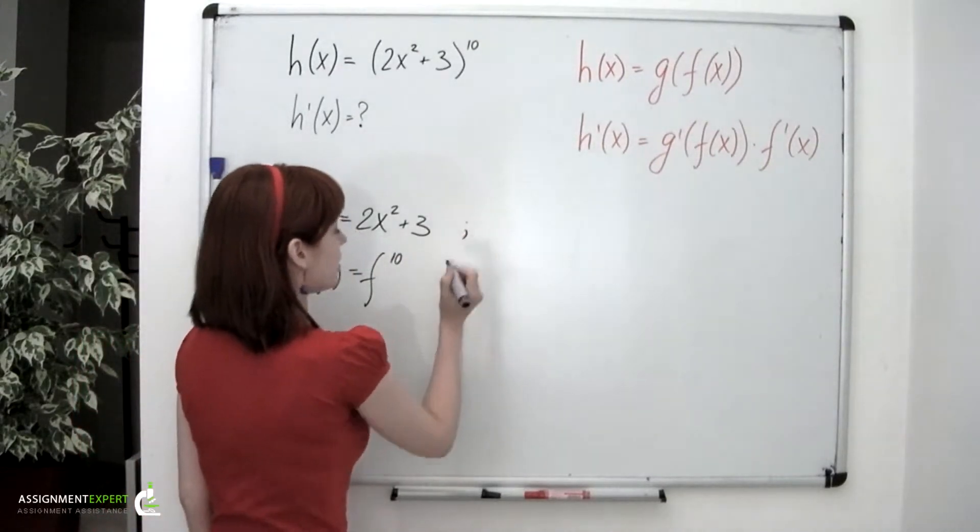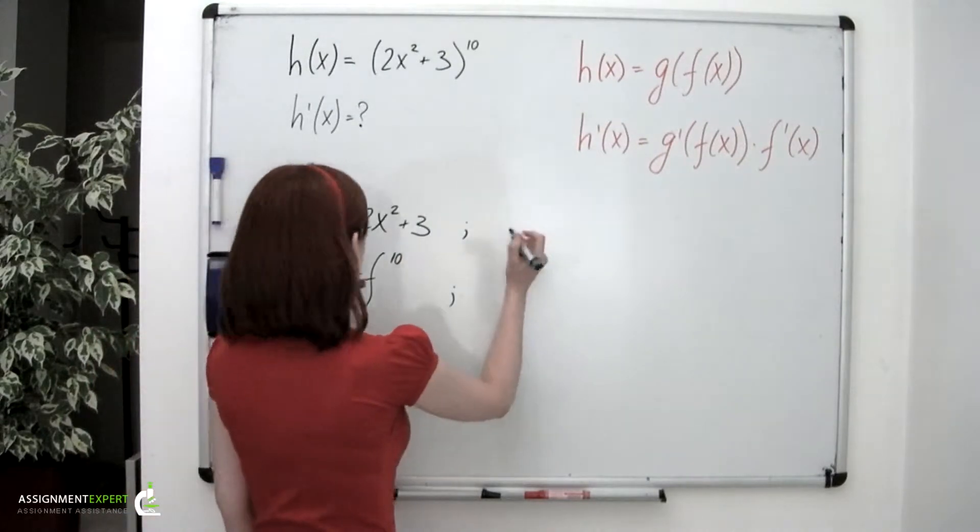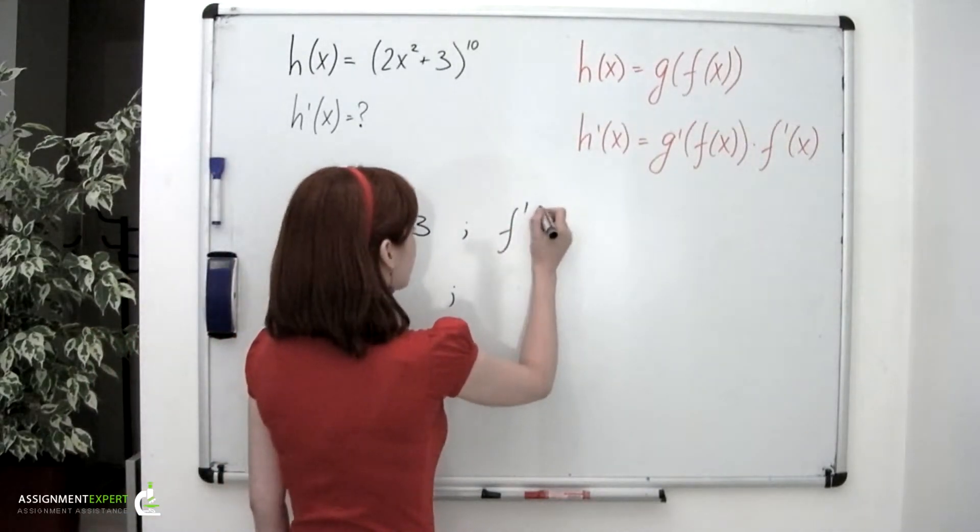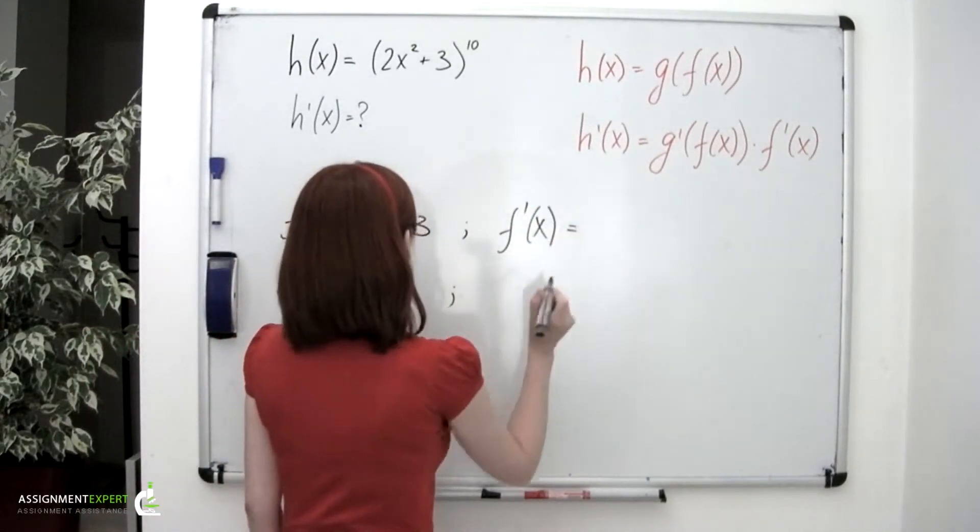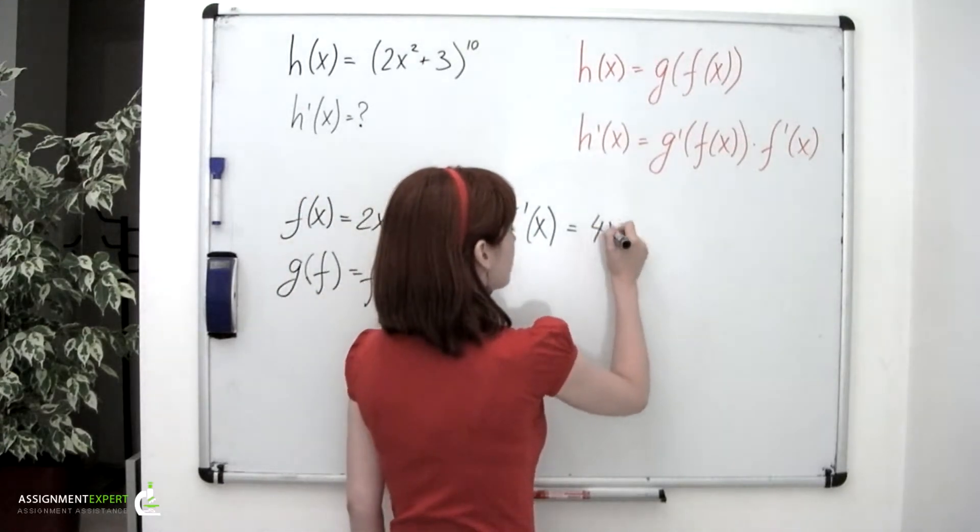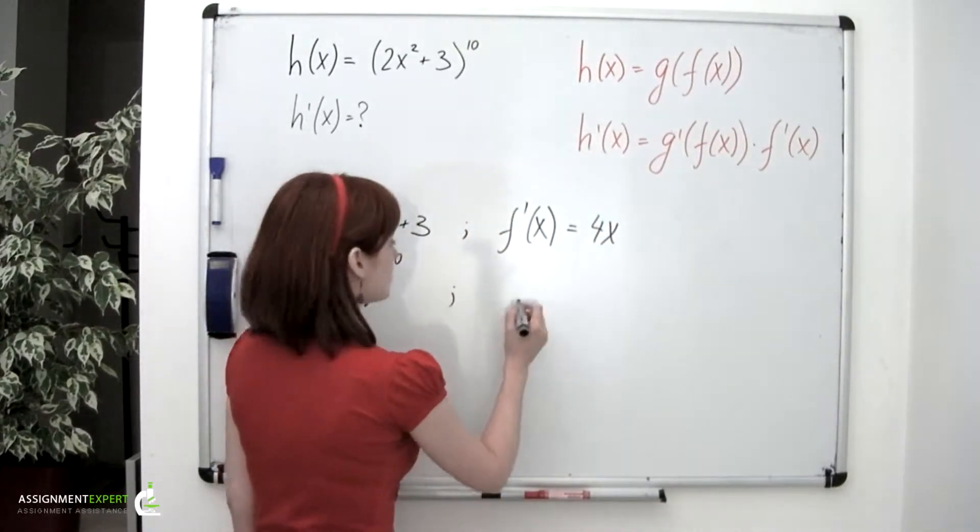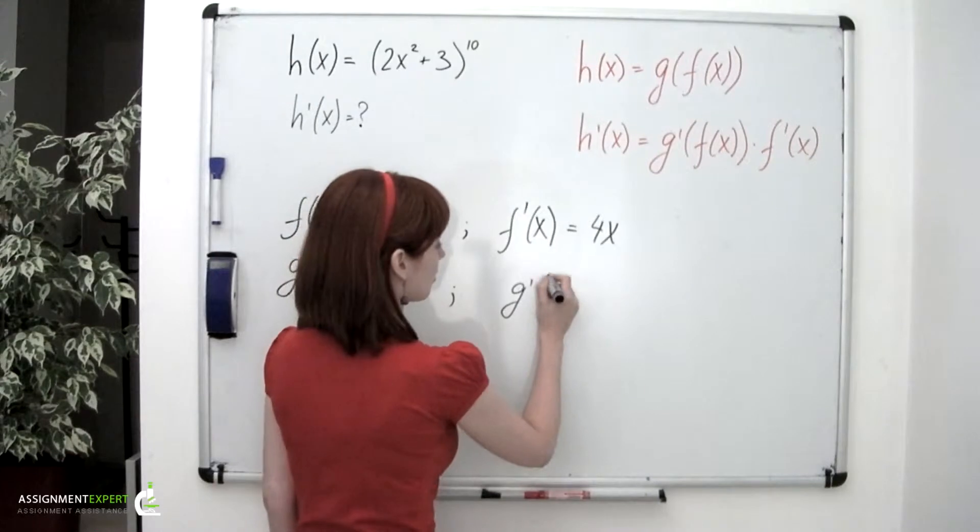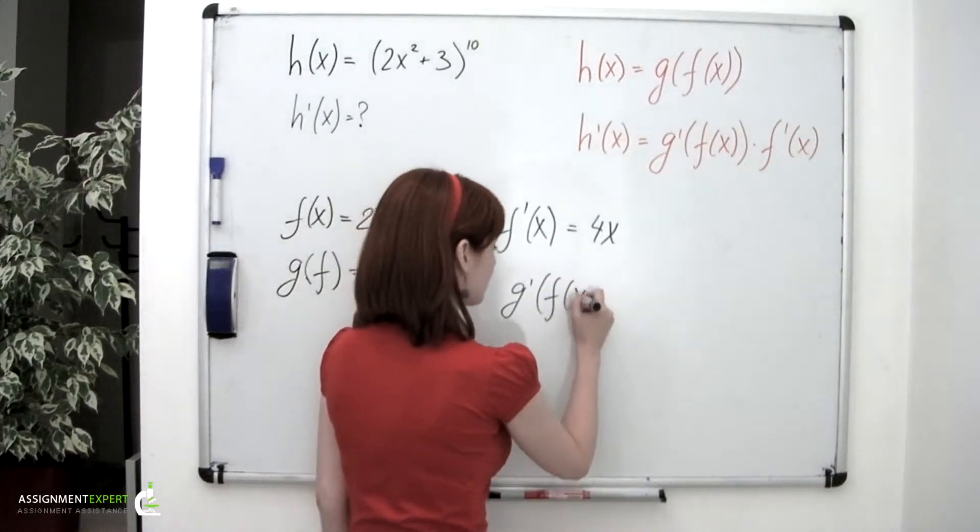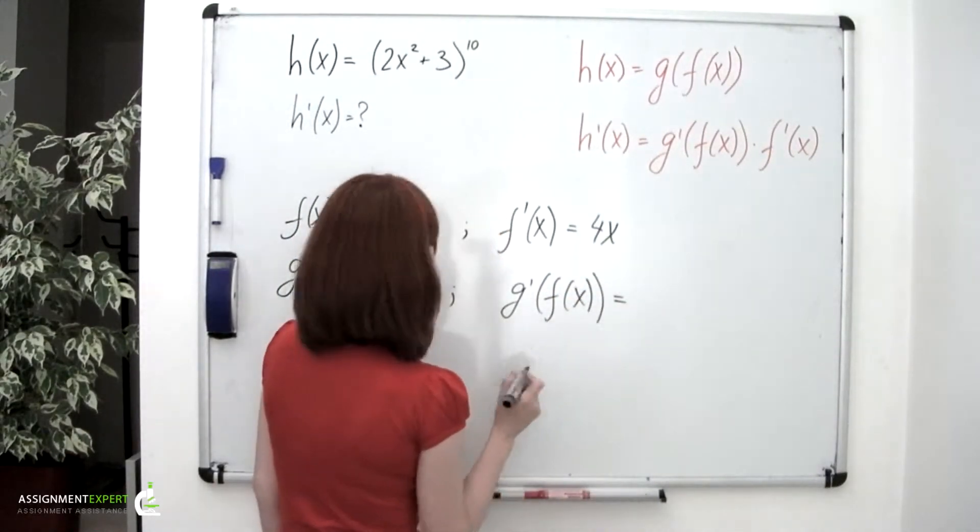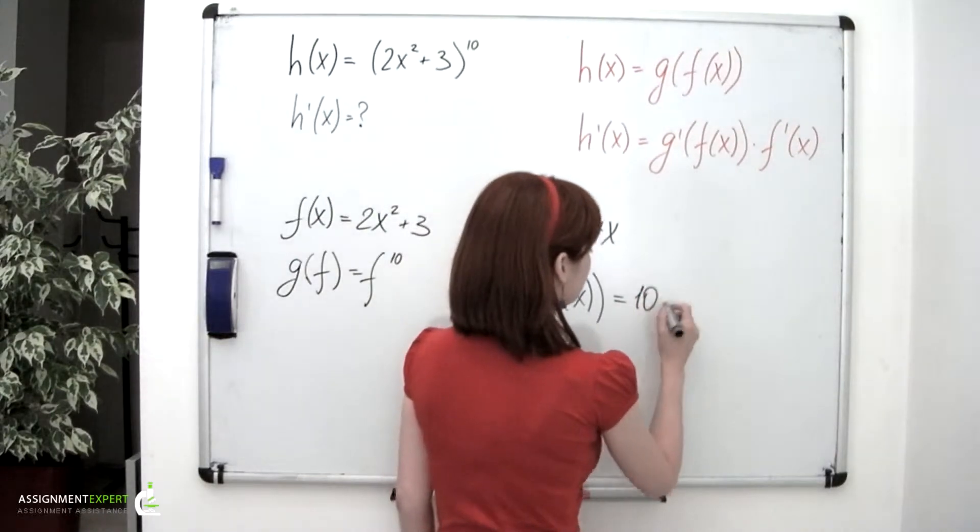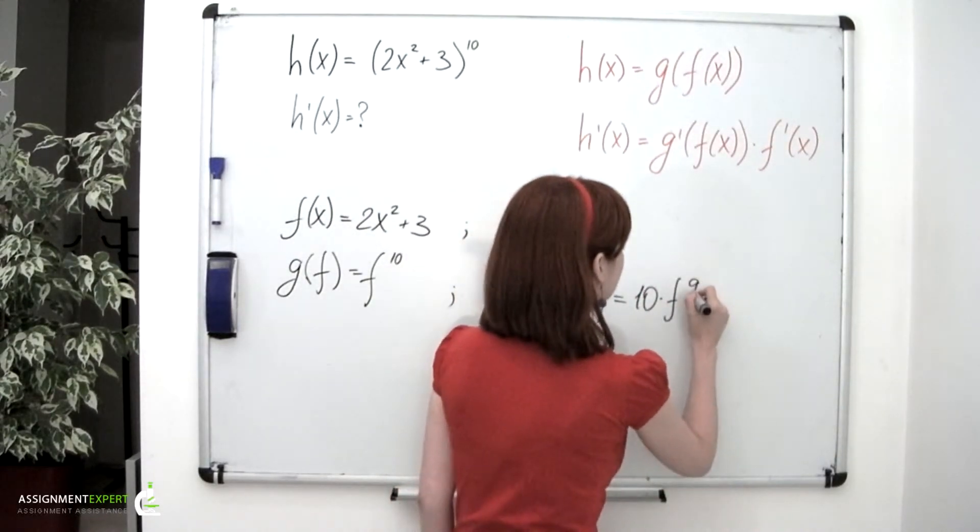Let's find derivatives of these two functions. So f' of x is equal to 4x and g' of f of x equals 10 times f to the 9th.